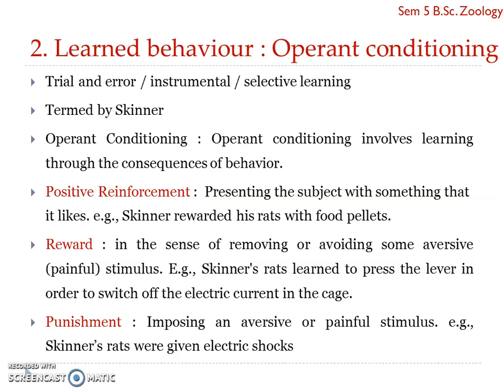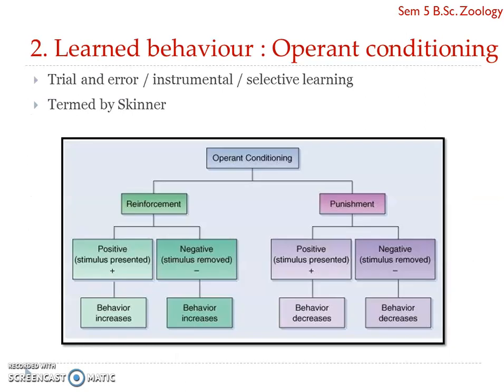Many coordinated activities and behaviors shown by higher organisms — especially higher vertebrates — are developed through trial and error learning. In operant conditioning, the process goes through reinforcement and punishment. With positive reinforcement, behavior increases and the animal has a tendency to repeat that particular behavior.